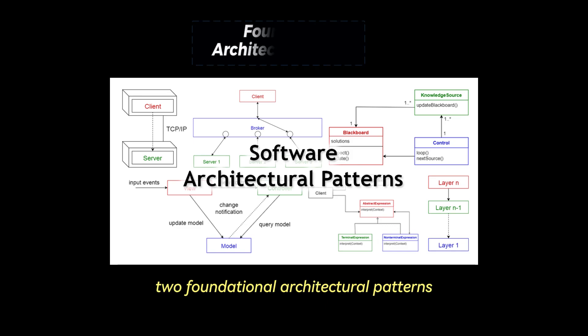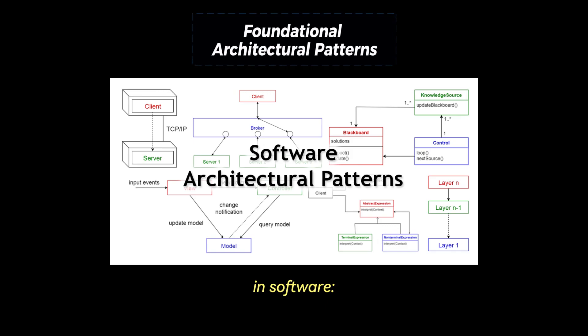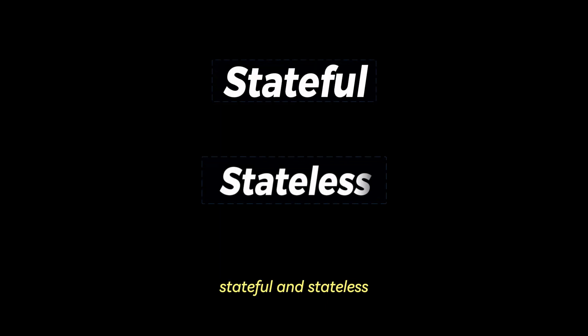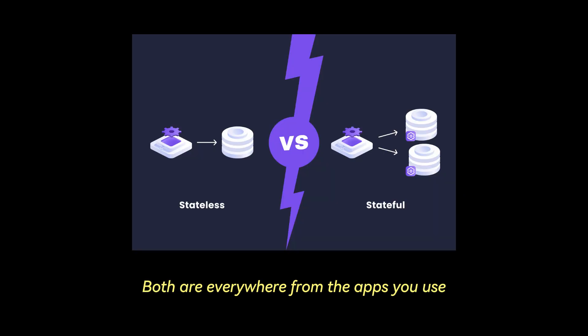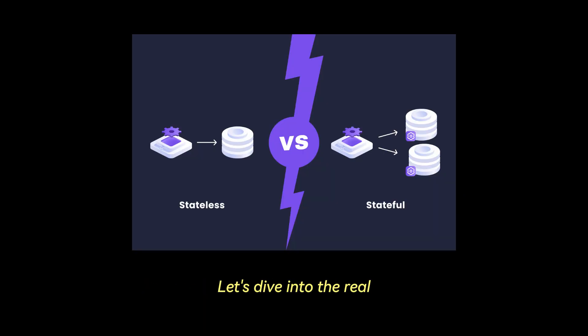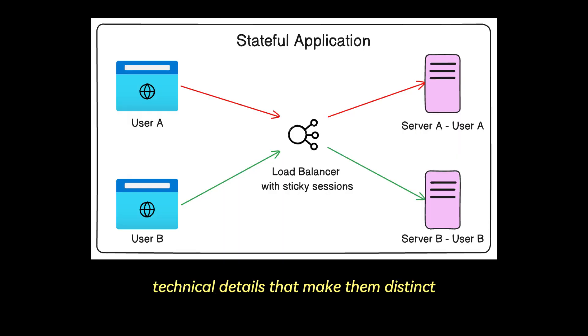Today we're digging into two foundational architectural patterns in software: stateful and stateless. Both are everywhere, from the apps you use to the systems developers design. Let's dive into the real technical details that make them distinct.